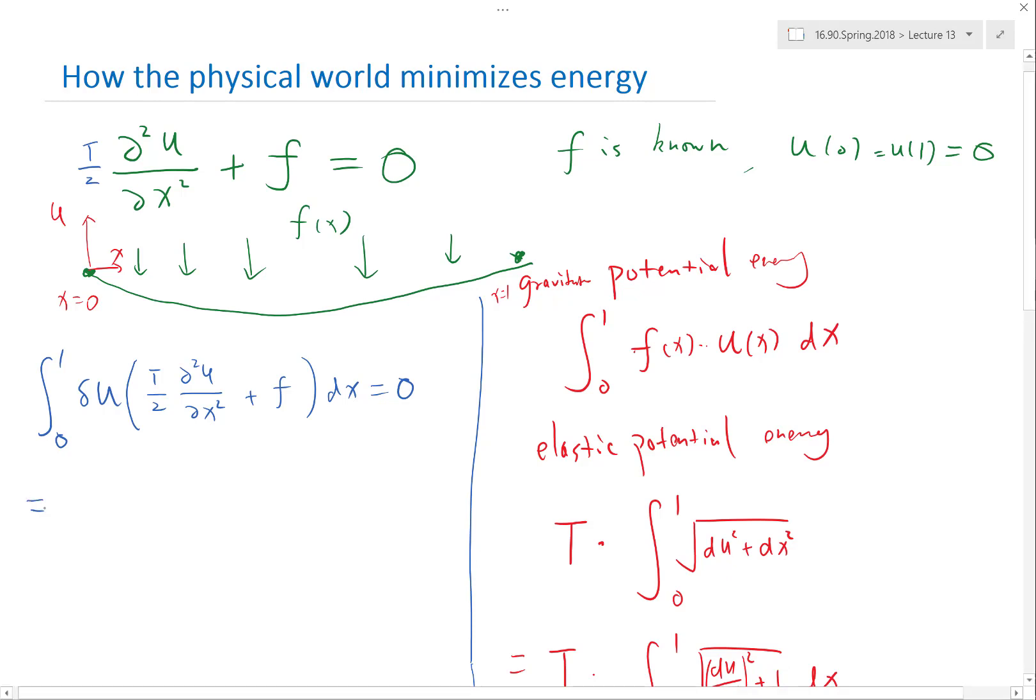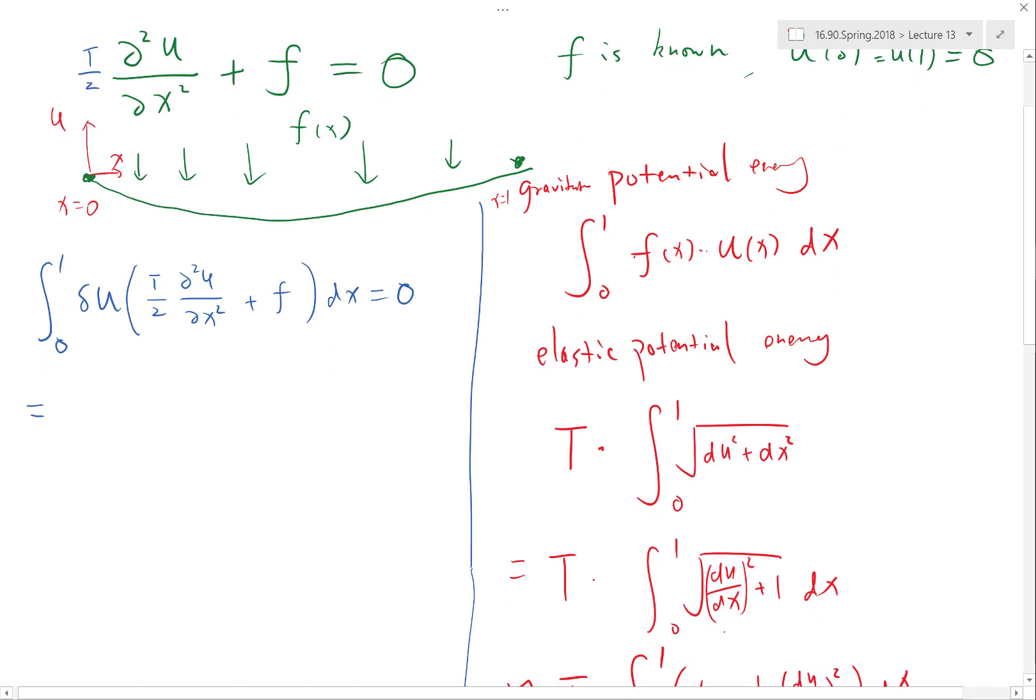So now let's split this equation into two parts. I'm not sure about this constant half t yet. We may go back and modify it. So the first part of this integral is half t times delta u times the second derivative of u dx and the second part is integral of delta u times f dx. This has to be equal to zero, right?